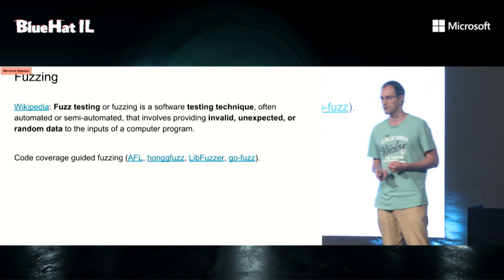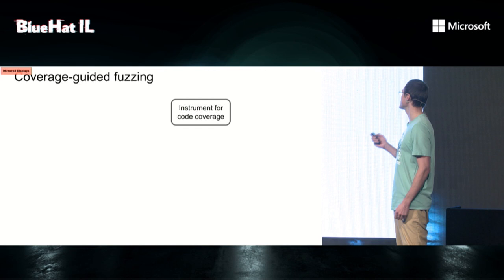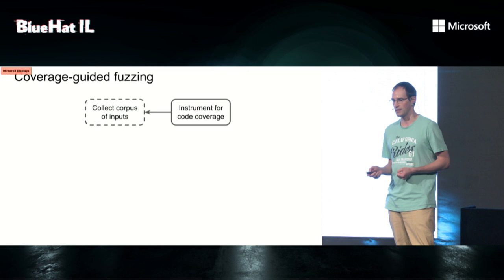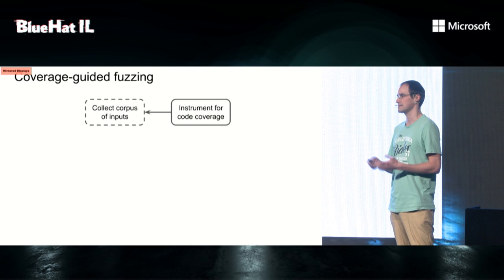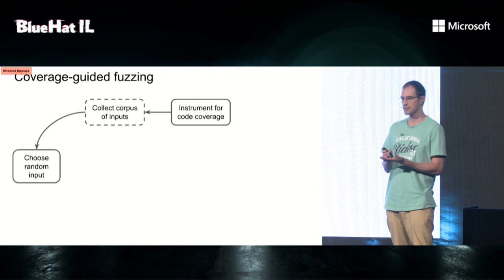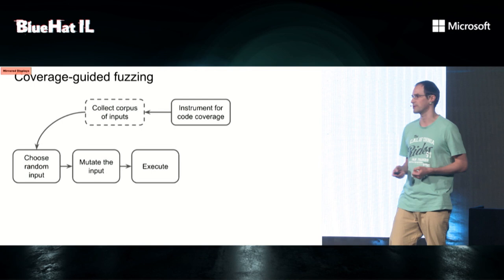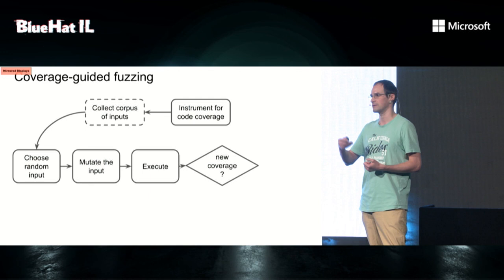So what is coverage-guided fuzzing? You start by building your program with code-coverage instrumentation, then you collect a corpus of inputs — you may take them from unit tests or start with just one input. Then you choose one random input from the corpus and slightly mutate it, for example by flipping some bits or inserting or removing bytes. Then you execute the program, collect code coverage, and if this execution gives new coverage — covering code never covered before — you add this program back to the corpus. This loop repeats infinitely.